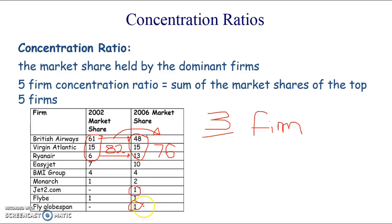Jet2.com, Flyglobespan in 2006 at that point. We're seeing EasyJet gain market share as well and Monarch. So when we have concentration ratios, when it's decreasing, it's suggesting that the market's getting a little bit more competitive. And the higher the concentration ratio, the less competitive it suggests the market is.